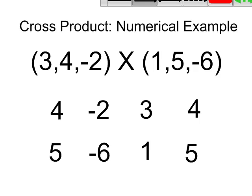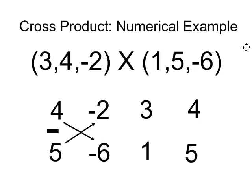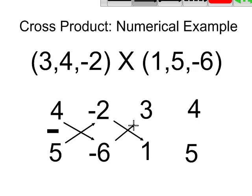Next is the operation that's going to give me the three coordinates of the resulting vector. I'm going to take 4 and multiply it by negative 6, and I am going to subtract 5 multiplied by negative 2. Then I'm going to take negative 2 and multiply it by 1 and subtract negative 6 multiplied by 3.